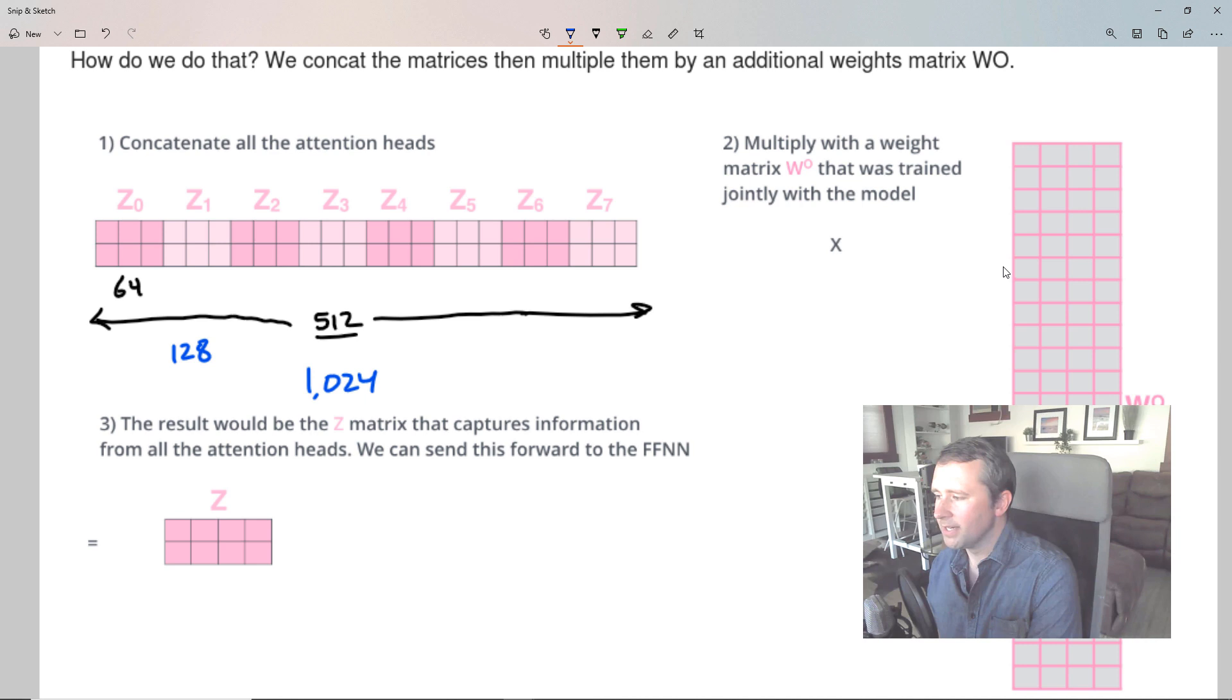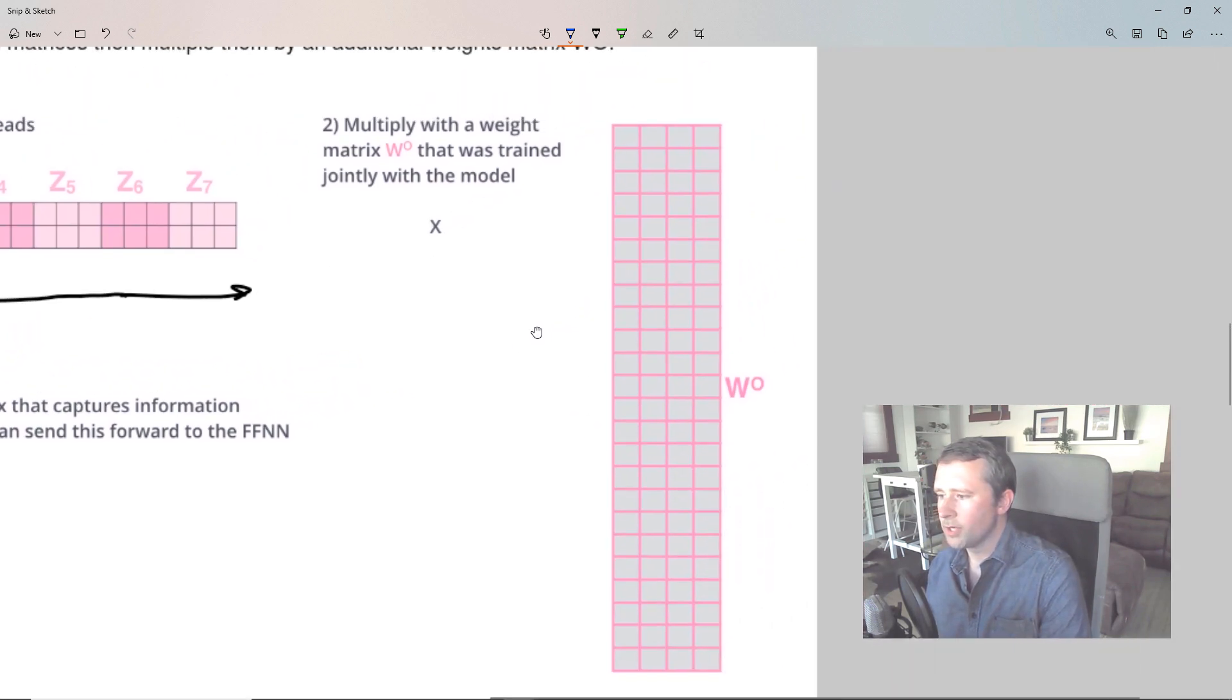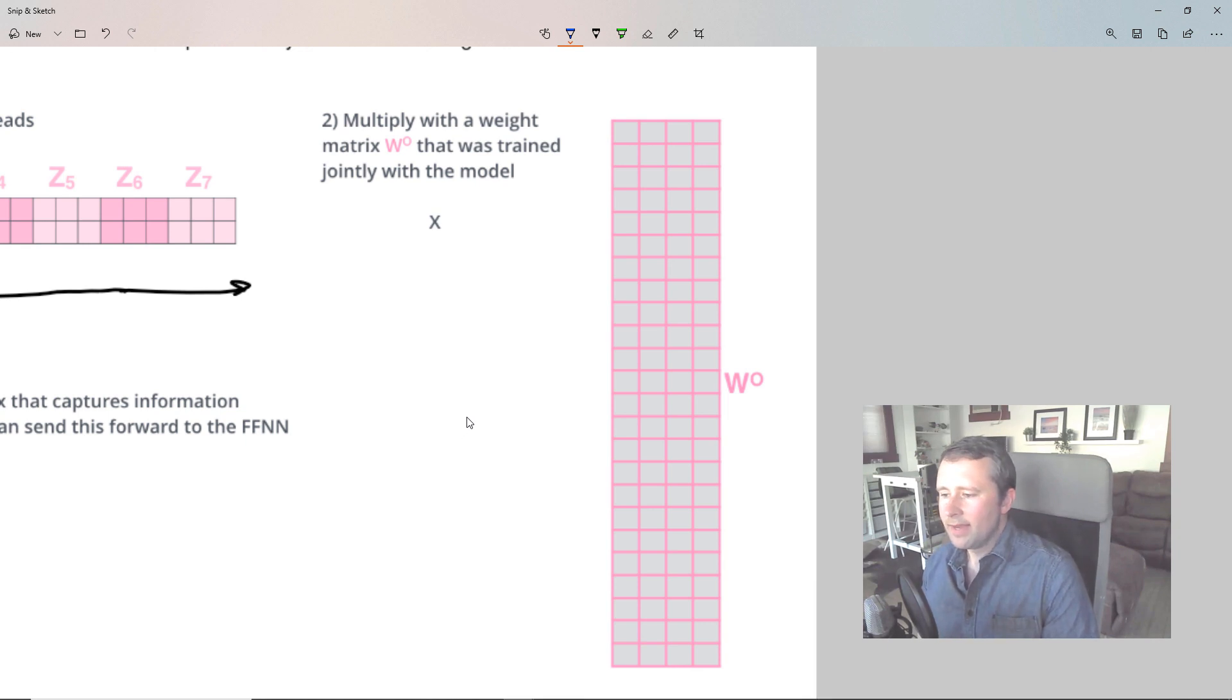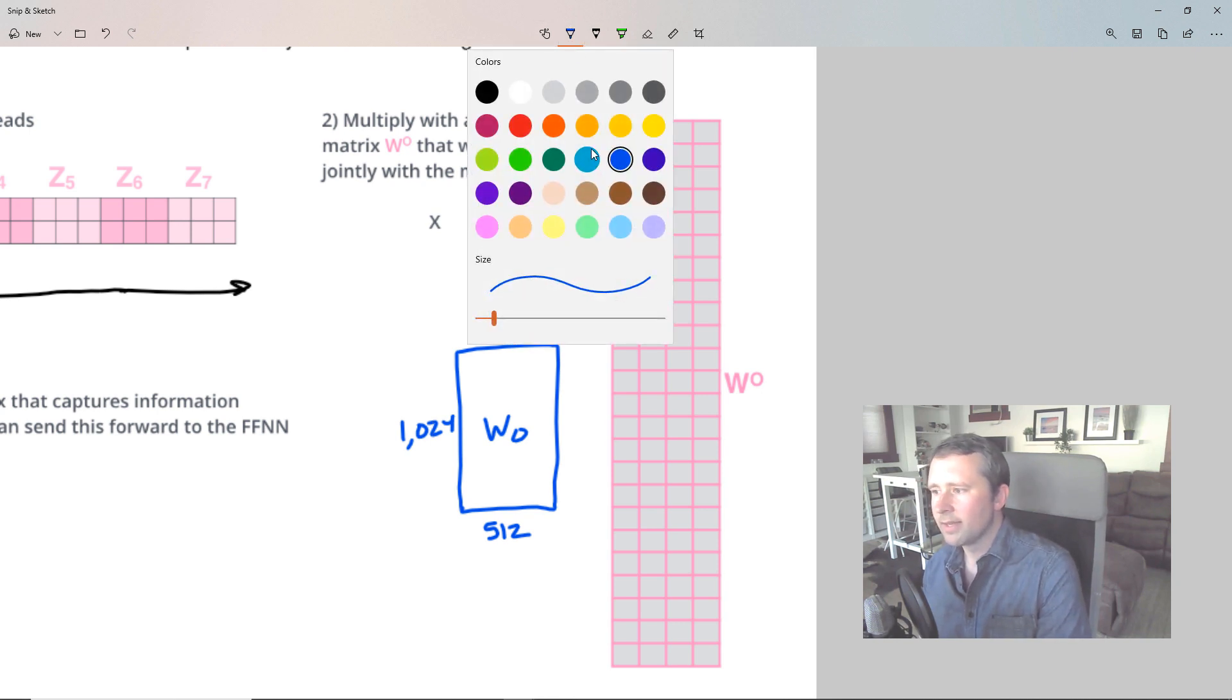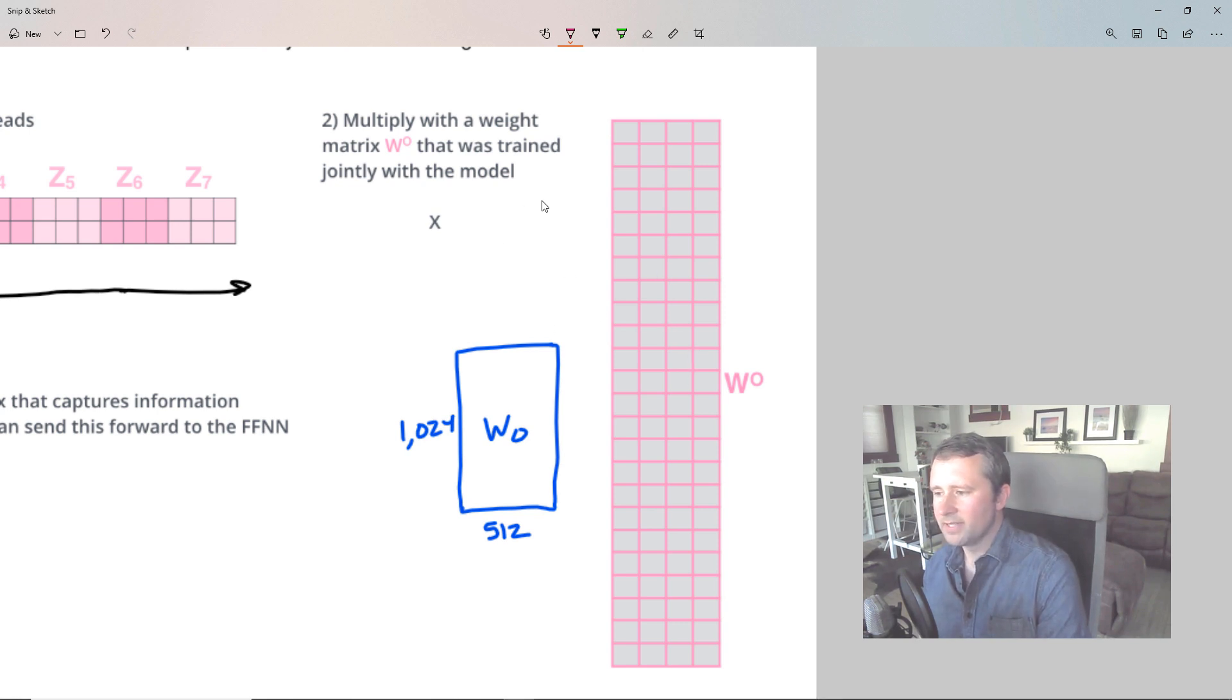So if these were actually 128, then with eight heads, this full thing would be 1024 and it would be the wrong dimension. So what we need then is another projection matrix that will allow us to get back down to 512 dimensions. So we have this WO matrix. And if we use size 128, then we would need this matrix to be 512 wide and 1024 tall. So WO gets us down to 512. However, what's interesting is that for the transformer, because we chose 64 with eight heads, WO is actually a square matrix. So I think Jay's illustration is a little misleading here because really WO in the transformer is 512 by 512.